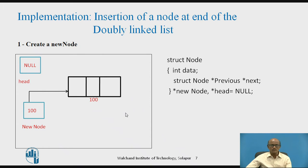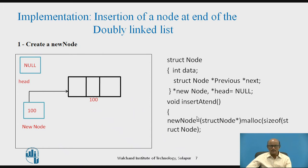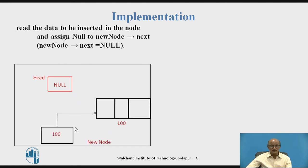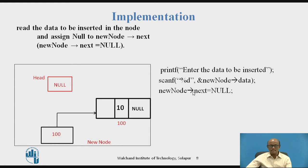The node is created using malloc. We then read the data from the user to be inserted into the node, assign it to the data part — for example, the value 10 is stored — and set new_node->next to null. Using printf and scanf, we read the data and assign null to new_node->next.